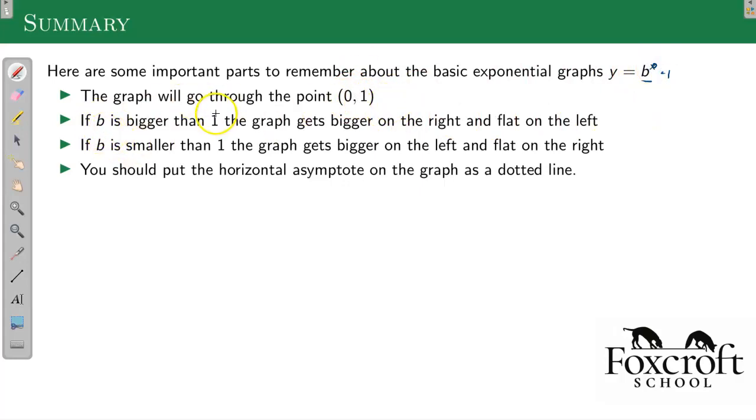If b, the base, is bigger than 1, it's going to look like 3 to the x. It's going to start slow and shoot up after that. If the base is smaller than 1, like 1 third, that's 0.3 smaller than 1, it's going to do the exact opposite. It's going to start high and then come down and then level off.